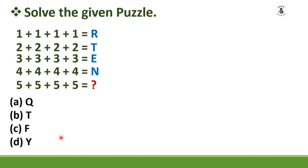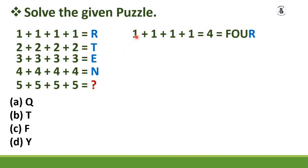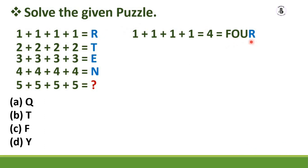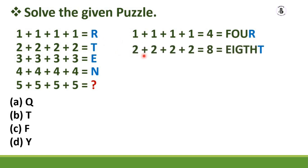To solve this, you have to make the relation of the sum with the alphabet order by spelling out the number word. Here 1+1+1+1+1 equals 4, so the word is F-O-U-R — the last letter is R. Then 2+2+2+2 equals 8, the word is E-I-G-H-T — so capital T goes here.